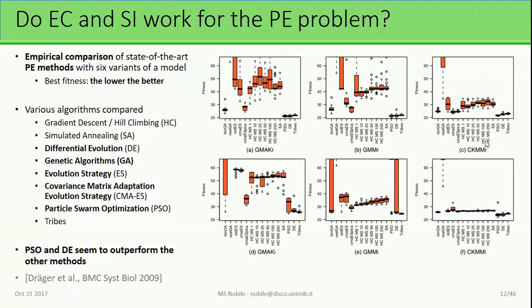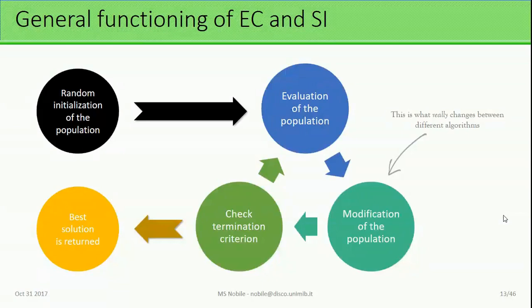Do these computational intelligence methodologies work for the problem of parameter estimation? This is what Dreger and his colleagues investigated. They took six models and used state-of-the-art parameter estimation methods to compare performances. The result is that particle swarm optimization and differential evolution are consistently among the best algorithms for the problem, with the exception of one case in which differential evolution never converged to the solution. So yes — evolution and swarm intelligence work for this problem.